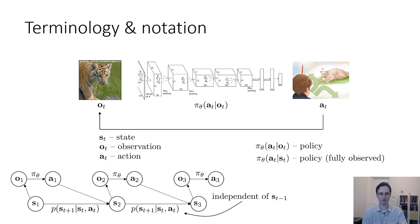The Markov property is the main thing that distinguishes the state from the observation. The state has to satisfy the Markov property, whereas the observation does not. The observation is some stochastic function of the state, which may or may not contain all the information necessary to infer the full state. We will discuss algorithms for both fully observed reinforcement learning, where we have access to the state, and partially observed reinforcement learning, where you only have access to an observation.